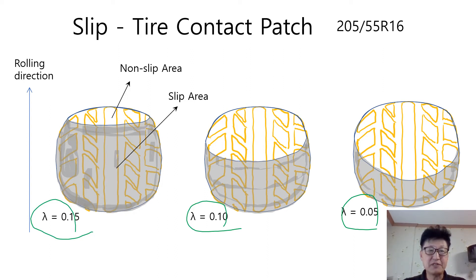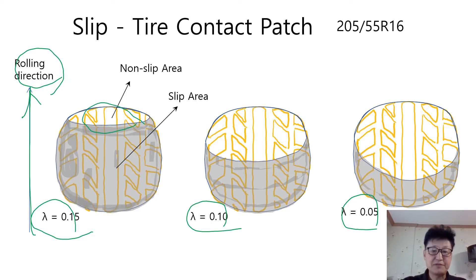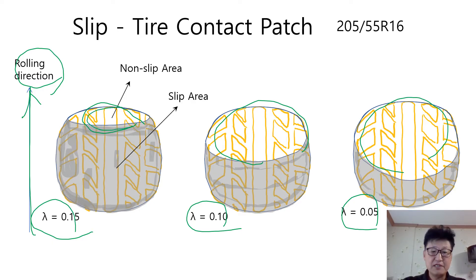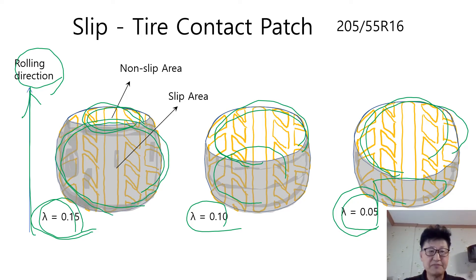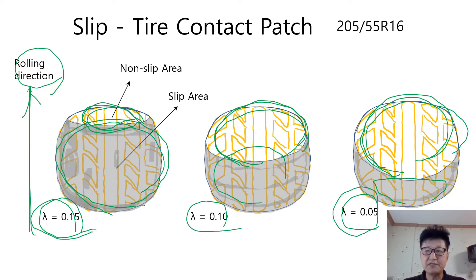Here we have the rolling direction. Assuming that this is the forward rolling direction, the upper part of this picture shows the non-slip area — you can see the clear tire pattern here. The lower part of this picture with gray color is the slip area. In the lower slip ratio, the slip area gets smaller, but in the higher slip ratio, the slip area gets larger as you can see in the picture. The leading part of the non-slip area has the peripheral velocity calculated by the corresponding effective radius and the angular velocity.